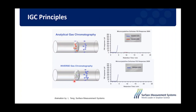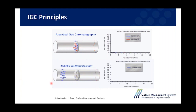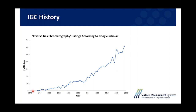Inverse gas chromatography, or IGC, is one way to measure surface energy and is the preferred method for measuring surface energies of powders, particulates, and fibers. You put the sample into a sample column, elute different probe molecules, and measure the retention time, which is related to how strongly or weakly those molecules interact with the surface. IGC is a relatively newer technique — invented around the 1960s, and over the last 20 to 30 years there has been a significant increase in publications, showing it is becoming more widely used to study surface properties.